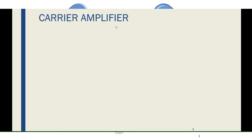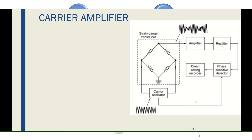First, what is a carrier amplifier? Here we are using a carrier signal. The block diagram of the carrier amplifier uses a strain gauge transducer, which measures the physical quantity and converts it into an electrical signal. This transducer is excited by a carrier oscillator that generates the carrier signal. After filtering, the signal is modulated — here amplitude modulation (AM) is used, since the amplitude is being modulated.